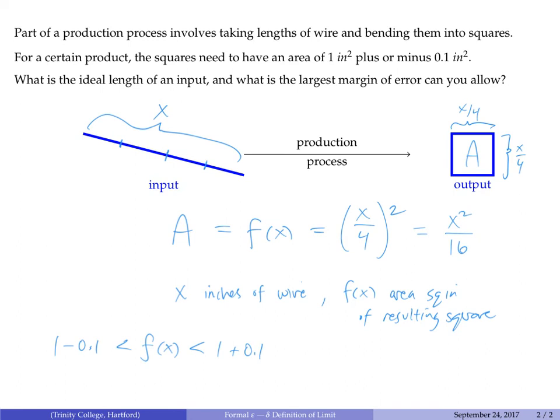Maybe by now you've realized we've already answered this question. The acceptable lengths of wire would be x = 4, which produces exactly the answer we want, but if we stay within ± 0.1952 inches, all these squares will have area between 0.9 and 1.1.